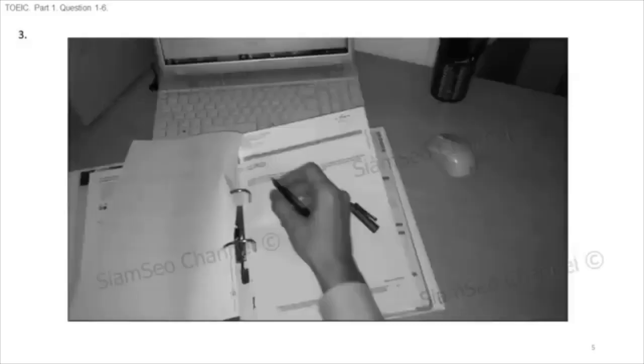Number 3. A. The man is typing on the keyboard. B. The papers are under the computer. C. The screen has been turned off. D. The pen is being used.